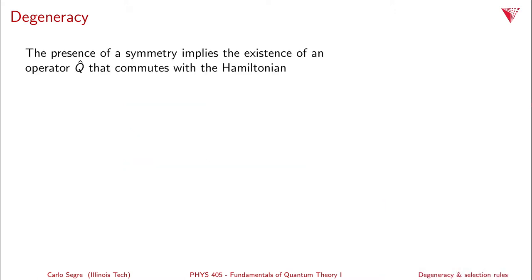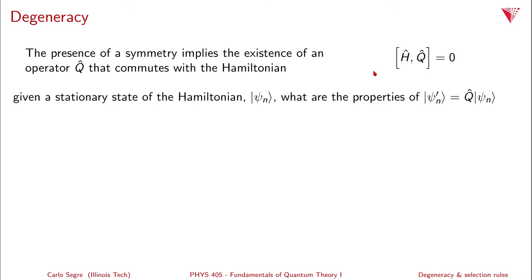The presence of symmetry implies the existence of an operator Q that commutes with the Hamiltonian. That operator is the symmetry operator. And if it commutes with the Hamiltonian, then we can learn something about its transformation of the stationary states of the Hamiltonian.